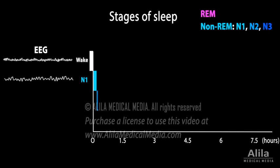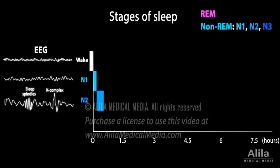The next stage is N2, a deeper sleep state where stronger stimuli are required to produce awakening. Brain activity is slower and more irregular, with short bursts of sleep spindles and K-complexes. It is believed that memory consolidation occurs during this stage.